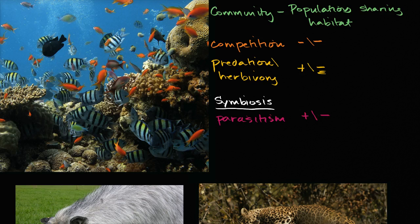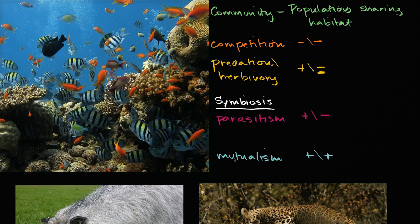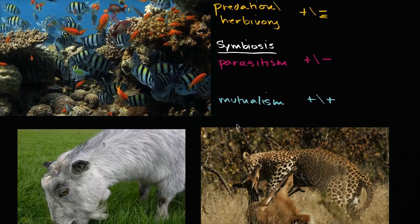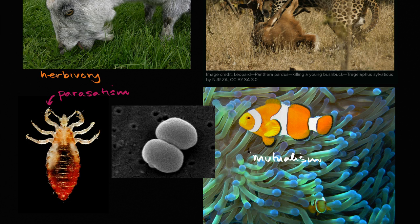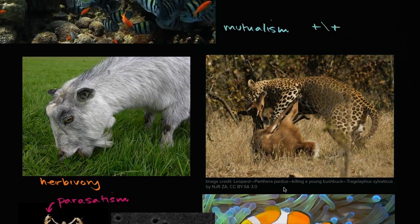Another situation is where it benefits both sides — that is called mutualism. This is where both species benefit. Often when people talk about symbiosis, they're really talking about mutualism, which is a specific type of symbiosis where both organisms benefit. An example is a clownfish living within a sea anemone: the sea anemone provides the clownfish shelter, while the clownfish keeps away other fish that might eat the sea anemone. They are both benefiting from that interaction.